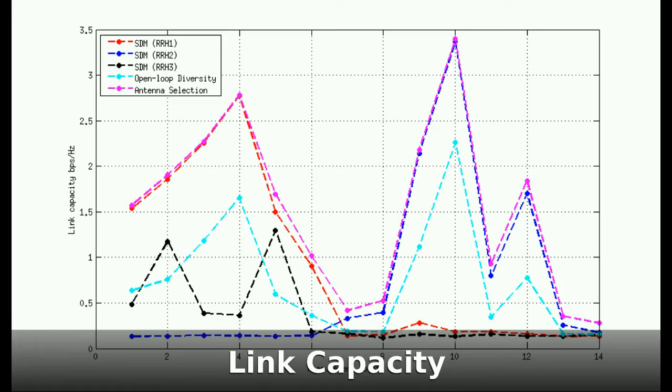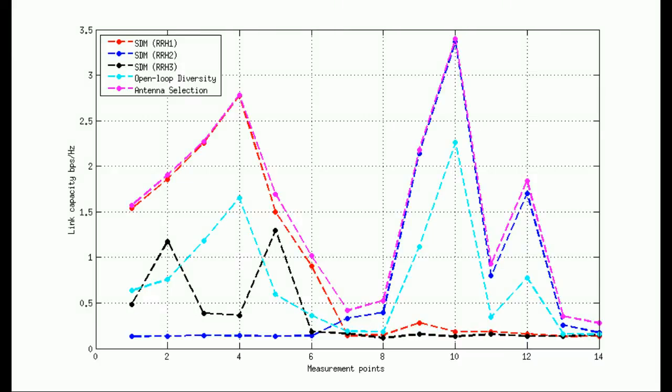In the first measurement we compare link capacity for individual remote radio heads and when the signal is combined with open-loop diversity or with antenna selection. Antenna selection is done in each frame; as you see, it is able to follow the strongest signal, while open-loop diversity averages over the signals. Therefore, antenna selection provides better capacity.